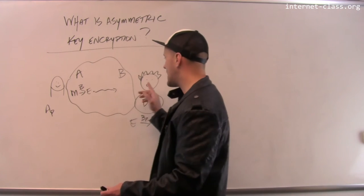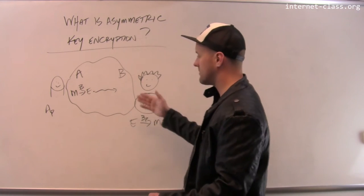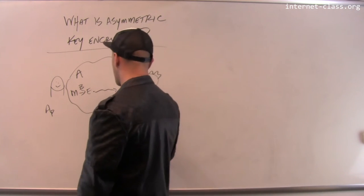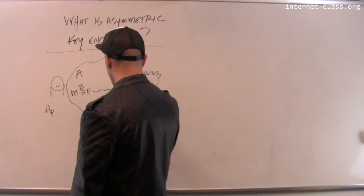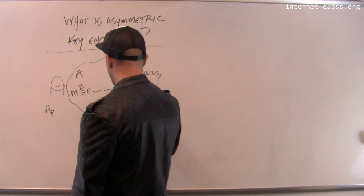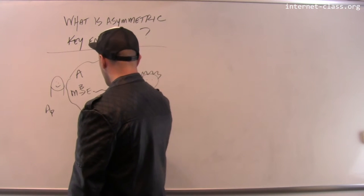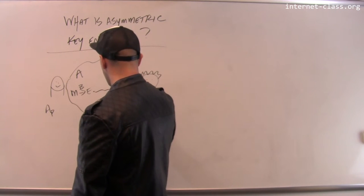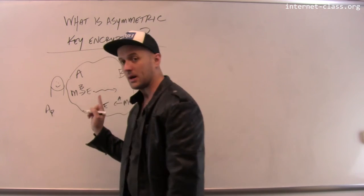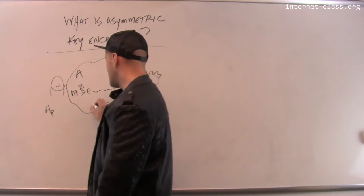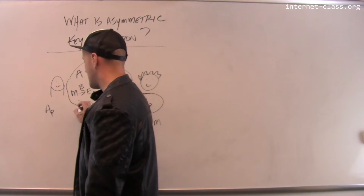How would Bob send a message to Alice? In this case, Bob takes the message, encrypts it using Alice's public key, and then sends that message to Alice.